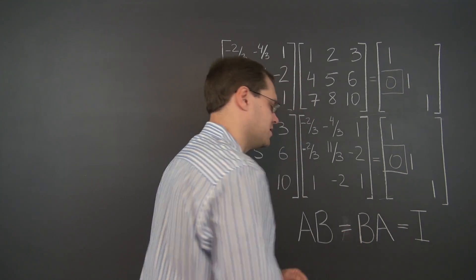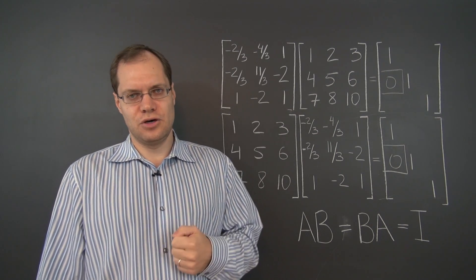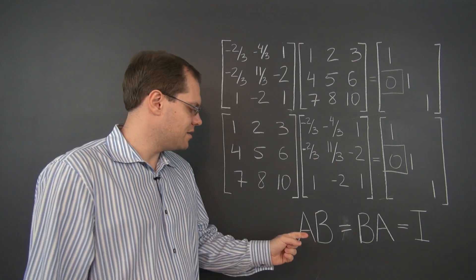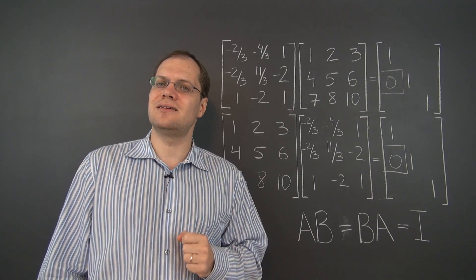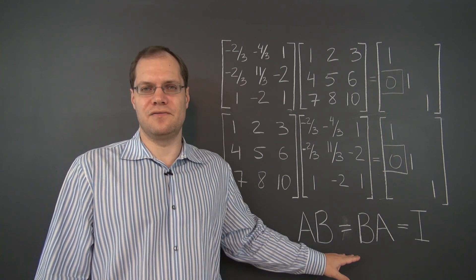So matrix multiplication is non-commutative, but there are two very fortunate and notable exceptions. One is when one of the matrices is the identity and the other is when the matrices are the inverses of each other.